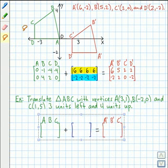Now let's fill in the coordinate matrix for the pre-image triangle ABC. The coordinates of A are 3, 1. For B we have negative 2, 0. And the coordinates of C are 1, 5.